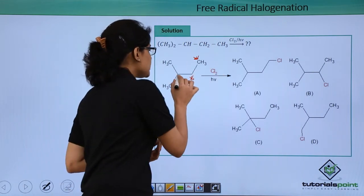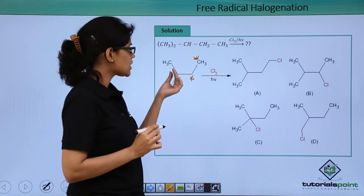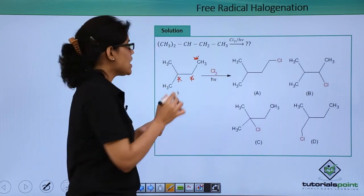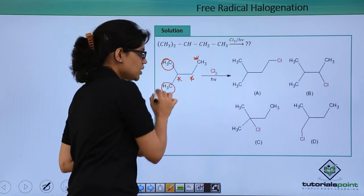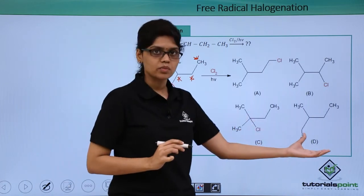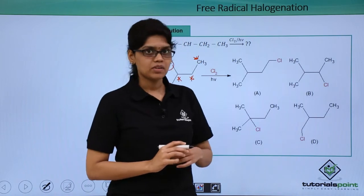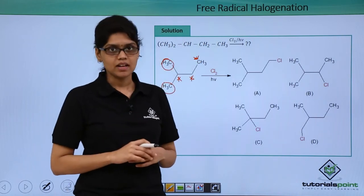In structure C we get a tertiary alkyl halide where chlorine adds to the carbon mentioned here. Since these two positions are equivalent, we get the last isomer where chlorine has been added to this particular carbon atom giving a primary alkyl halide.